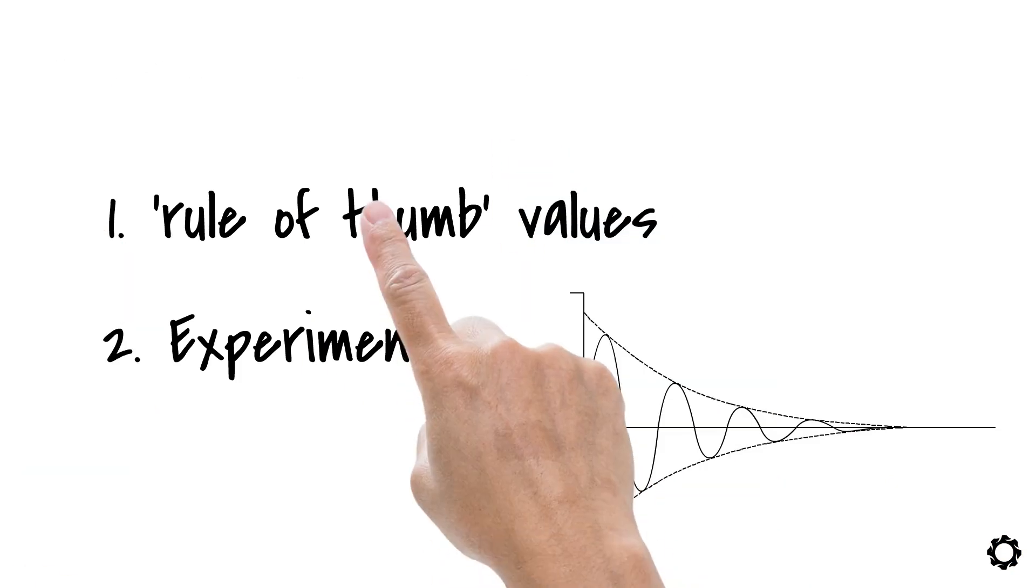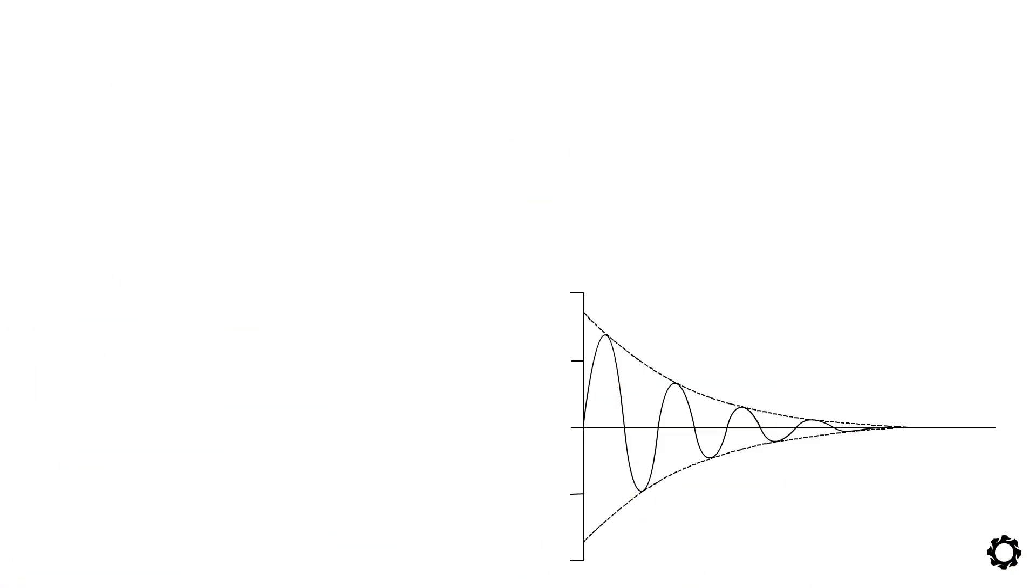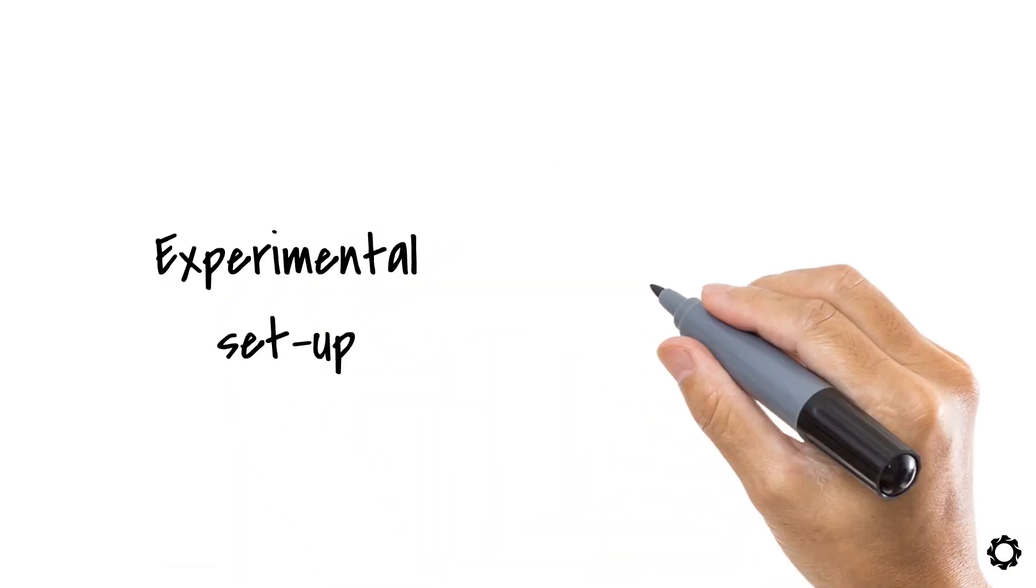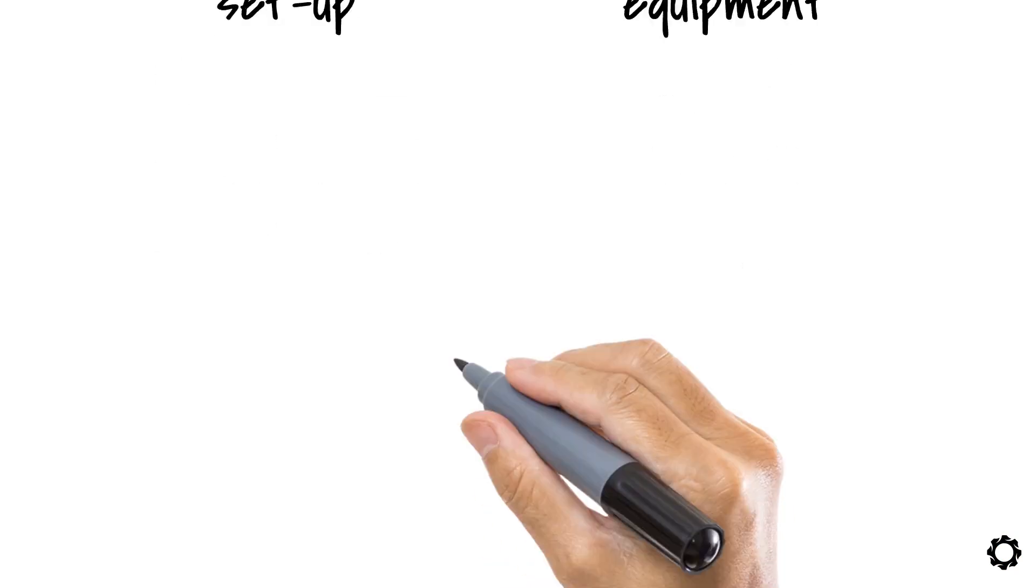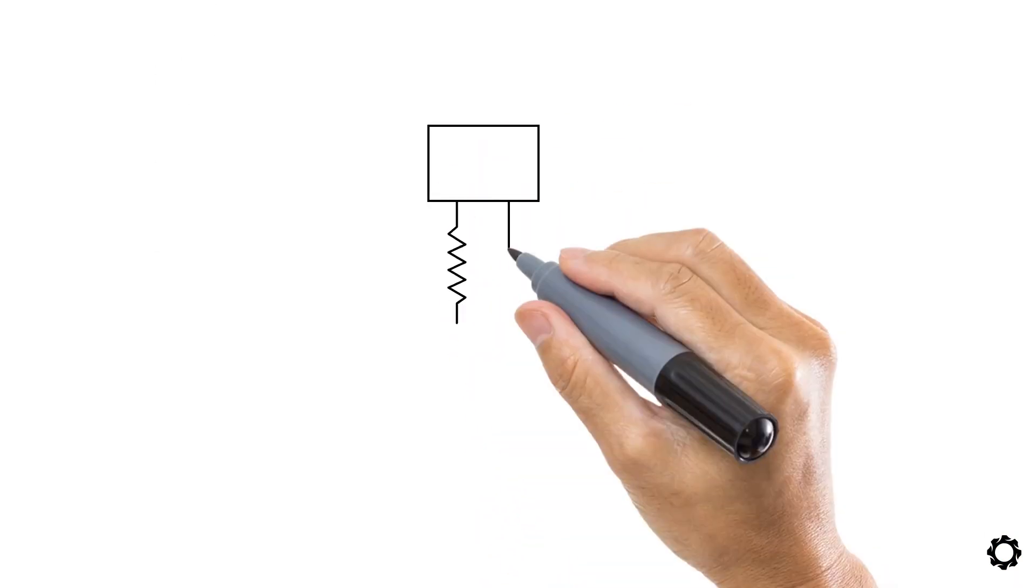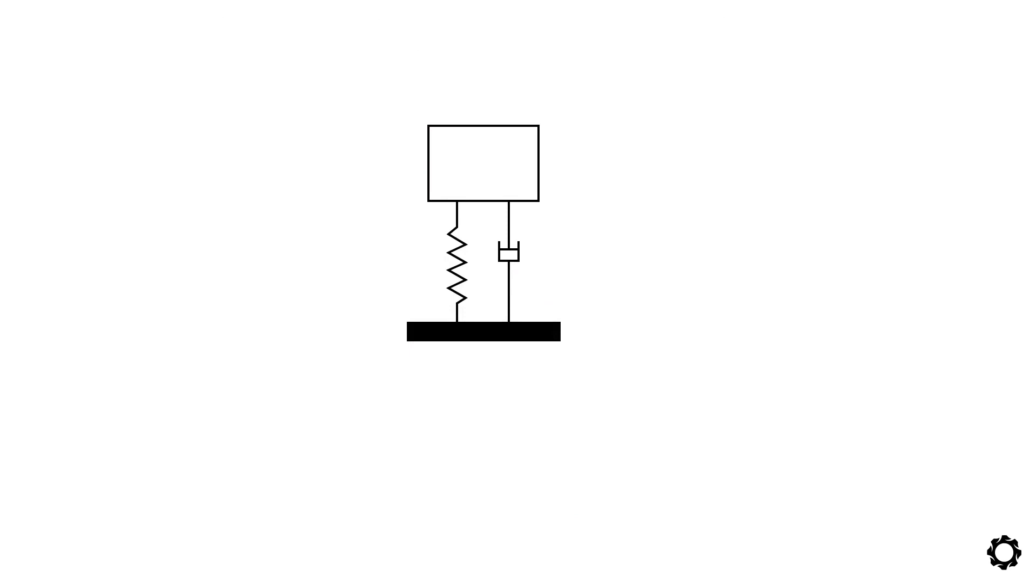Well let's get our heads out of the equations and formulae for now. We are going to look at the experimental setup and the type of equipment necessary to estimate damping. To start let's consider a spring mass damper system. To estimate damping we need various measurement devices.